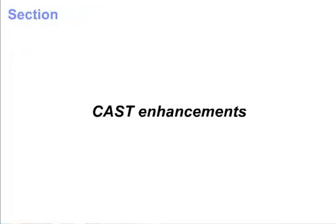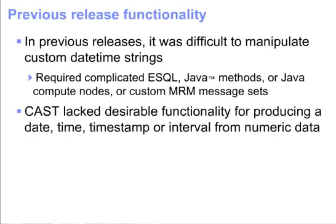This section discusses cast enhancements in Version 6. In previous releases, it was difficult to manipulate custom date-time strings. Often, you had to code the functions you wanted in ESQL or in Java methods, or use Java compute nodes, or custom MRM message sets. In addition, cast lacked functionality for producing a date, time, timestamp, or interval from numeric data.